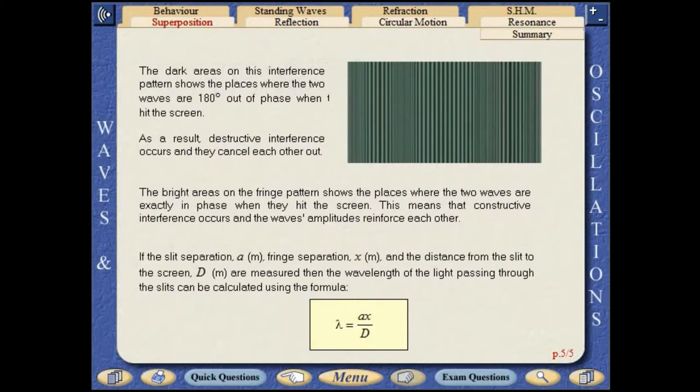The dark areas on this fringe show the places where the two waves are 180 degrees out of phase when they hit the screen. As a result, destructive interference occurs and they cancel each other out. The bright areas are the places where the two waves are exactly in phase when they hit the screen. This means that constructive interference occurs and the waves' amplitudes reinforce each other.